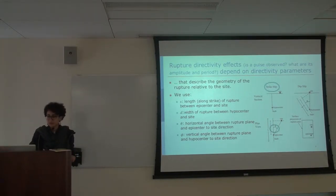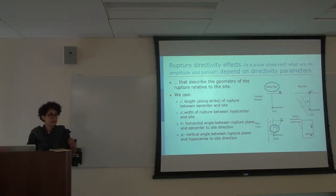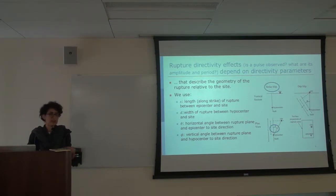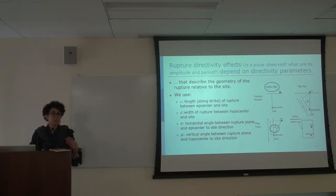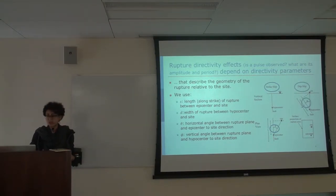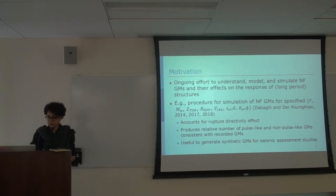The directivity parameters that we use are the length S and the width D of the rupture between the hypocenter and the site, as well as the horizontal and vertical angles theta and phi between the hypocenter-to-site direction and the rupture plane. S and theta are used for strike-slip faults, while D and phi are used for dip-slip faults. This is just to introduce you to the terminology that we're using.